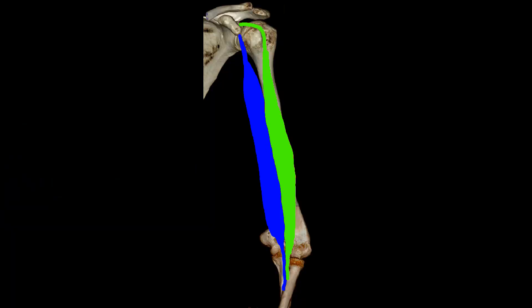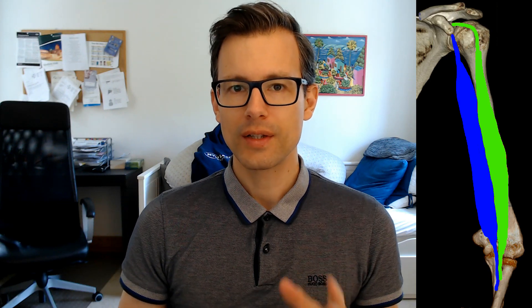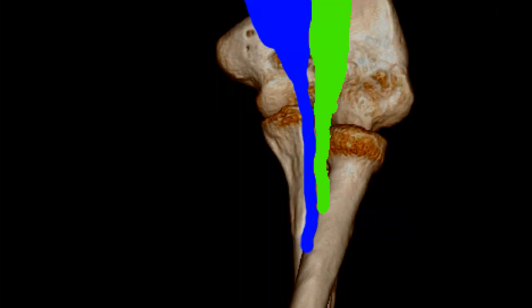Less known is that these two components are also present distally. The distal biceps tendon basically has two distinct components and they can rupture separately. As shown here, the short head of the biceps brachii is in blue and the long head in green. Looking at the distal biceps tendon, the short head inserts more distally into the radial tuberosity while the long head inserts more proximally.